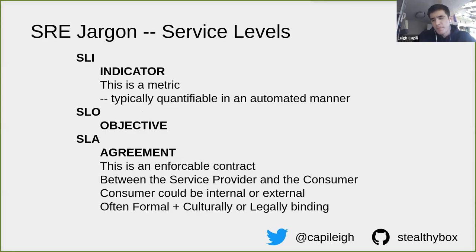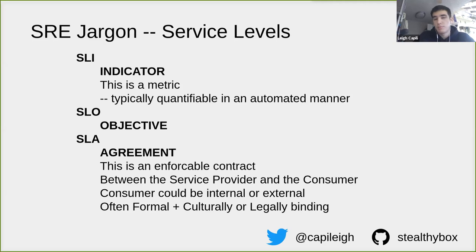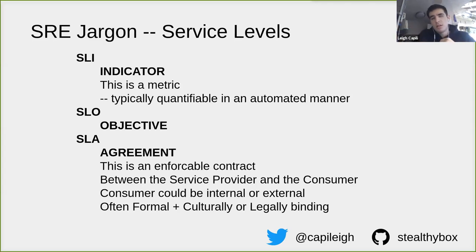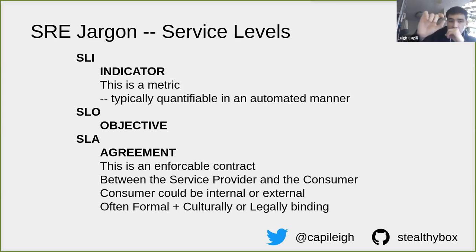Also consider logs and traces if you're reaching the maturity level of tracing at scale. People get hung up on acronyms and start throwing them around — they're becoming industry standard terms. It's all about service levels. In relation to a metric, these could be quantitative or qualitative. The SLI — Service Level Indicator — is typically the quantifiable thing you can automate upon.